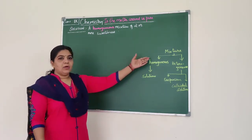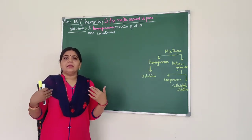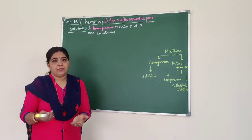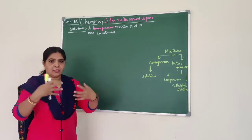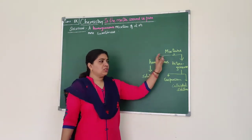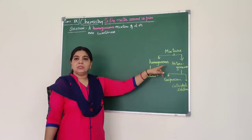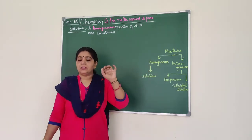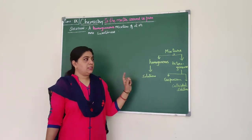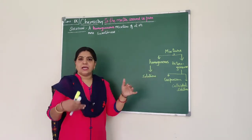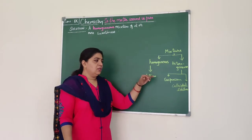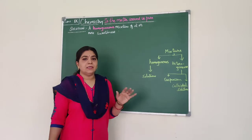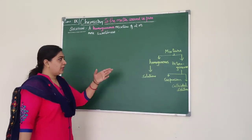We learned that a mixture contains two or more substances mixed in different proportions. Mixtures are of two types: homogeneous and heterogeneous. A homogeneous mixture has uniform composition and is called a solution. Heterogeneous mixtures have non-uniform composition, which includes suspension and colloidal solution. Let us now learn about the different types of mixture.